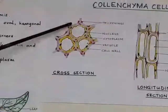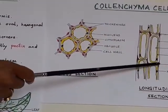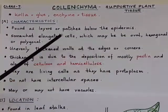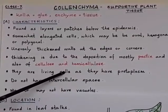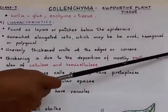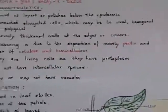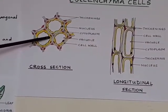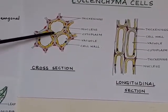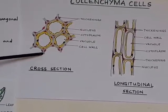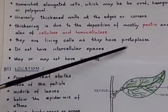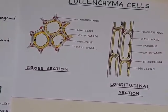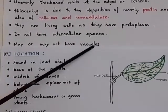The thickening at the edges or corners is due to the deposition of mostly pectin, and also cellulose and hemicellulose. They are living cells as they have protoplasm. They do not have intercellular spaces because, due to the deposition of pectin, hemicellulose, and cellulose, the intercellular spaces are not present. They may or may not have vacuoles; in some colenchyma cells vacuoles are not present.